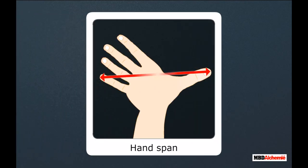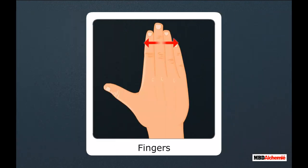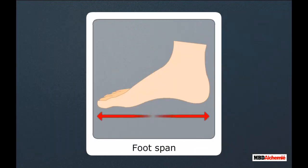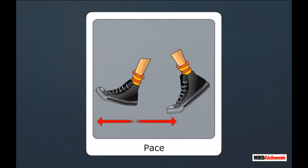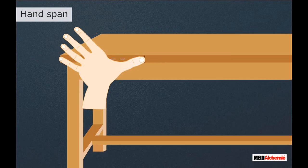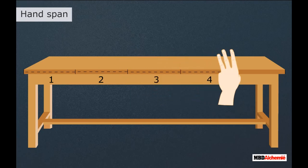Some non-standard units are hand span, cubit, fingers, palm, foot span, and pace. Hand span is the distance from the tip of the thumb to the tip of the little finger in a stretched hand. For example, the length of this table is about five hand spans.